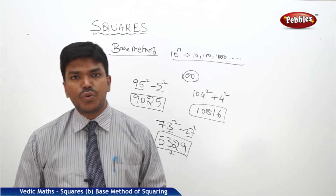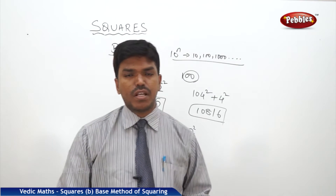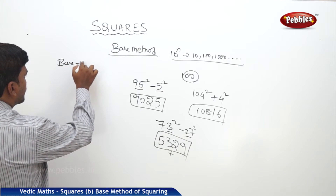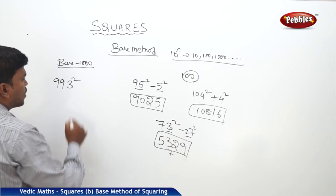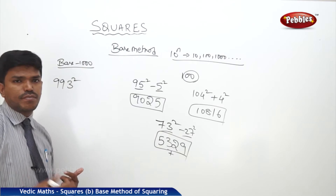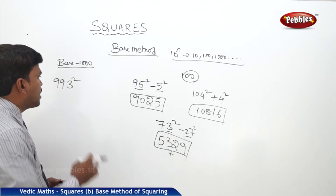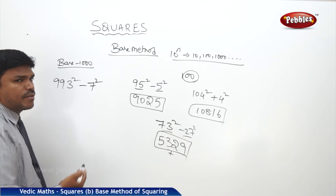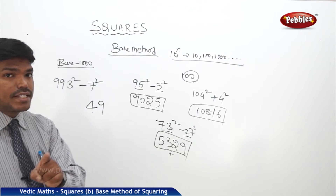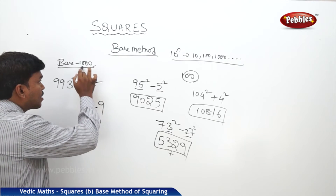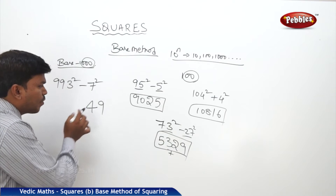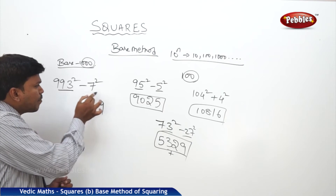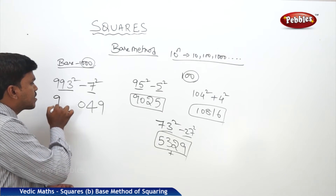Now we extend the same method to base 1000. Suppose I need 993 squared. 993 is closer to 1000, so take base as 1000. It is less than the base — how much less? 7. What is 7 squared? 49. But the right side part must have 3 digits because there are three zeros in 1000, so write 049. Now 993 minus 7 is 986. So the answer is 986049.